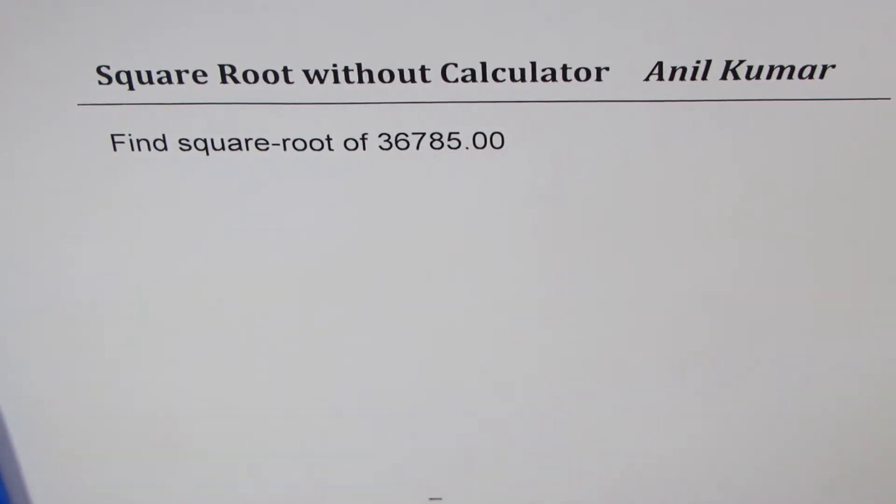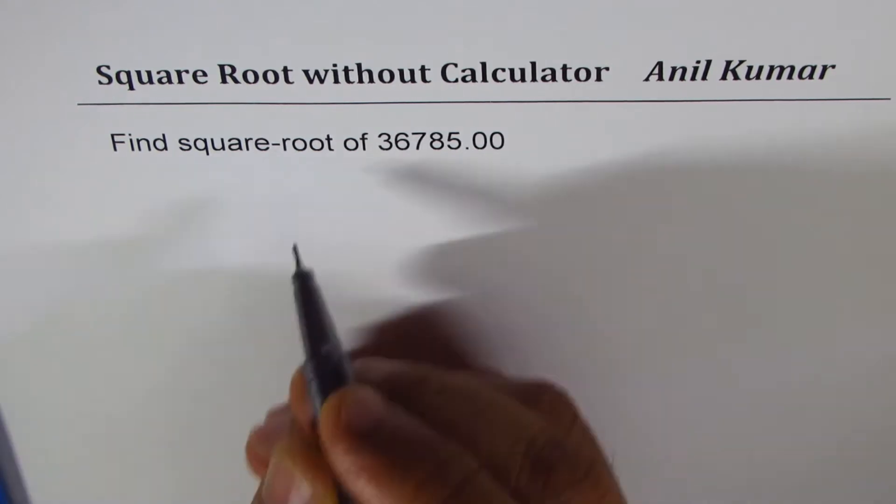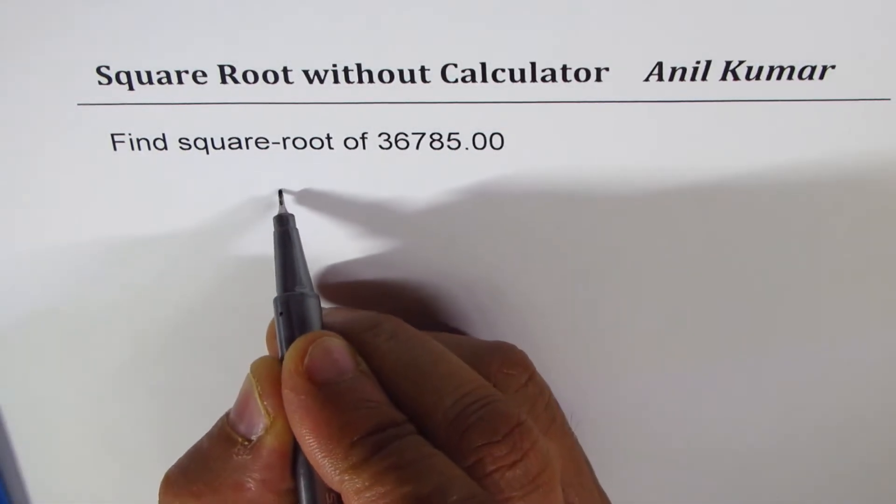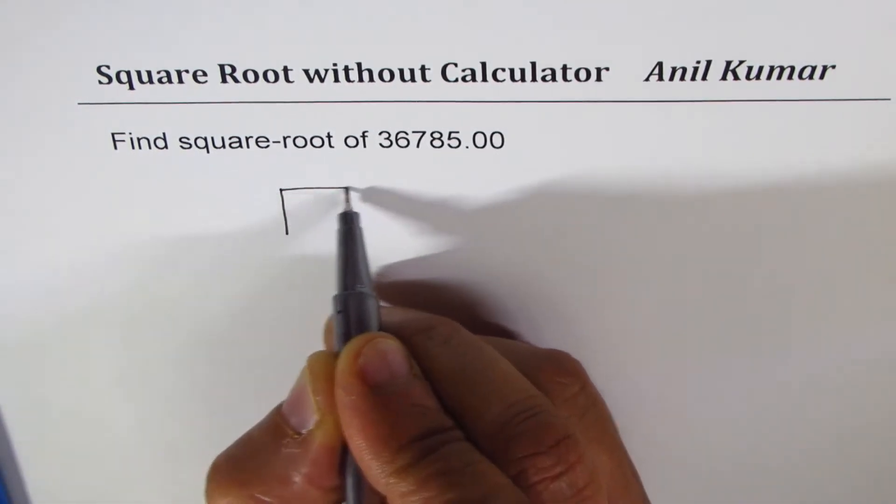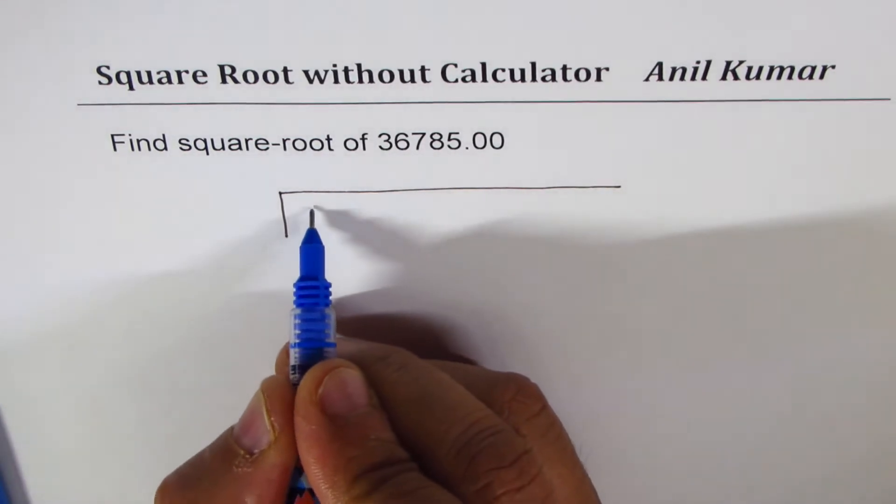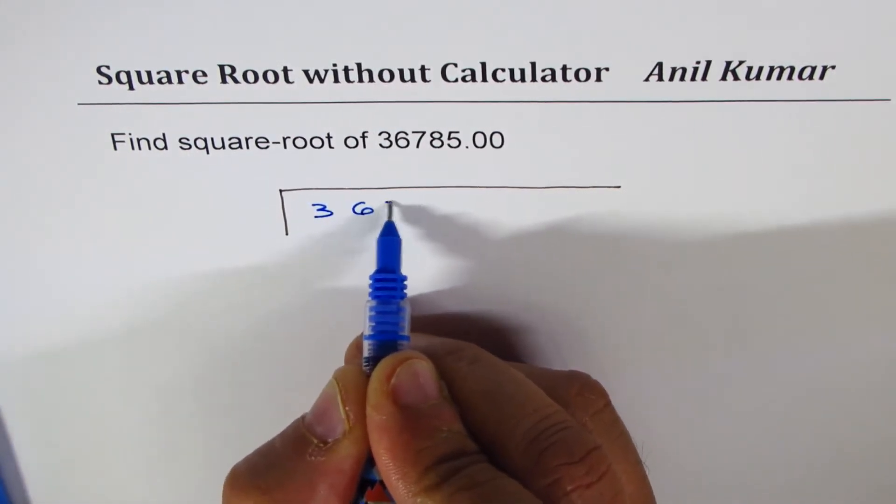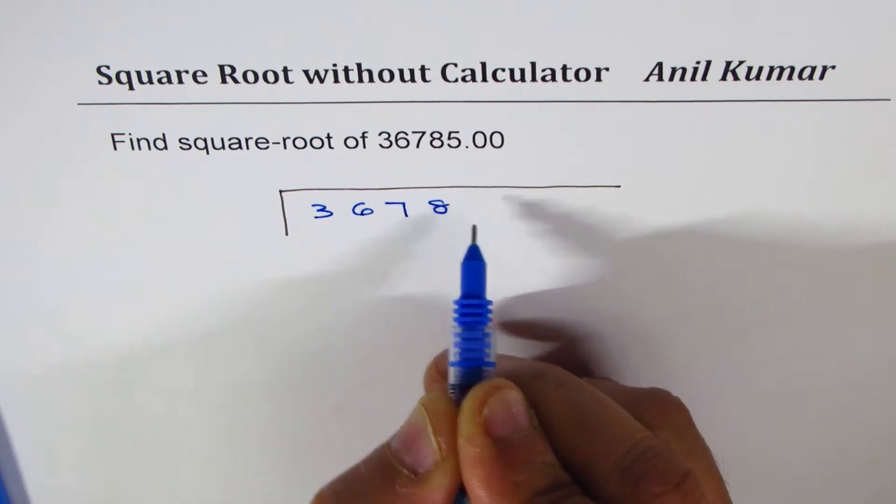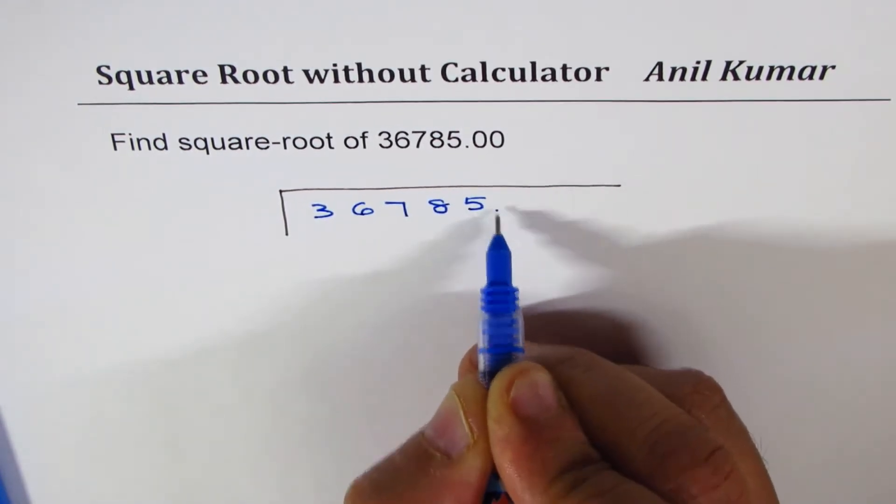So let's begin with this process of division, a very special division. Let me make a different kind of a bar this time. The number is 36785.00.